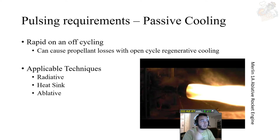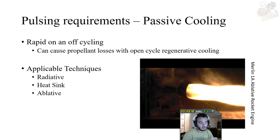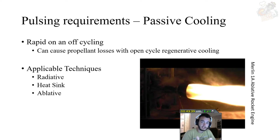Pulsing requirements are another constraint — this is when a rocket engine is meant to be used on and off, similar to an RCS thruster with rapid restarts. Rapid on-and-off cycling really limits your cooling technique choices. Regenerative cooling requires a jacket filled with coolant, and if you turn the engine on and off you get losses from waste propellant. Similarly, with film and transpiration cooling, all the coolant inside the nozzle can boil off and cause issues. For pulsing requirements, the most applicable techniques are radiative, heat sink, and ablative cooling, as these are least susceptible to propellant losses and overall performance losses.